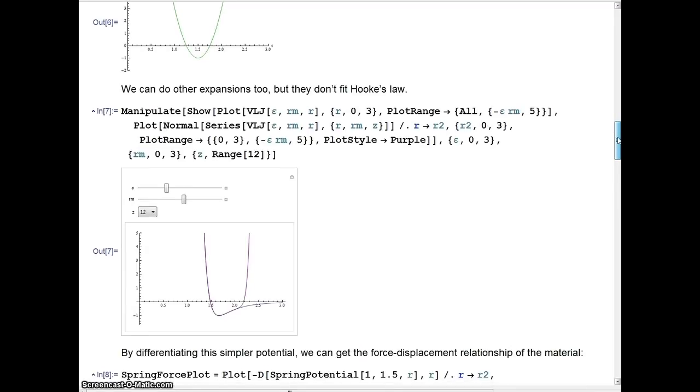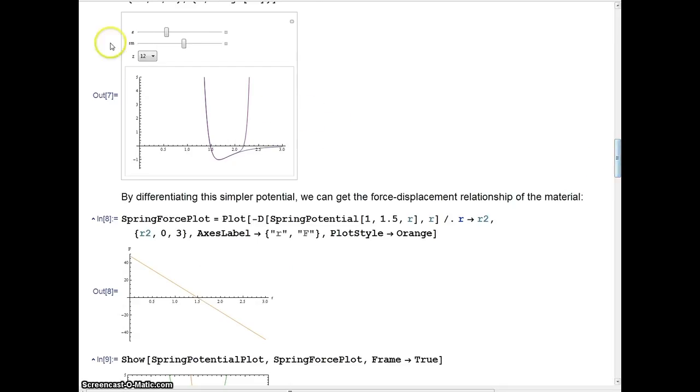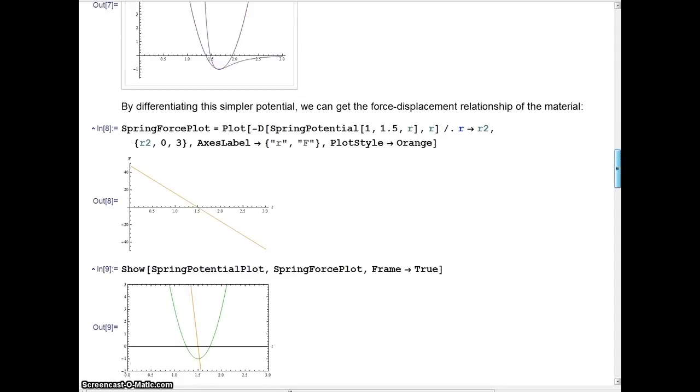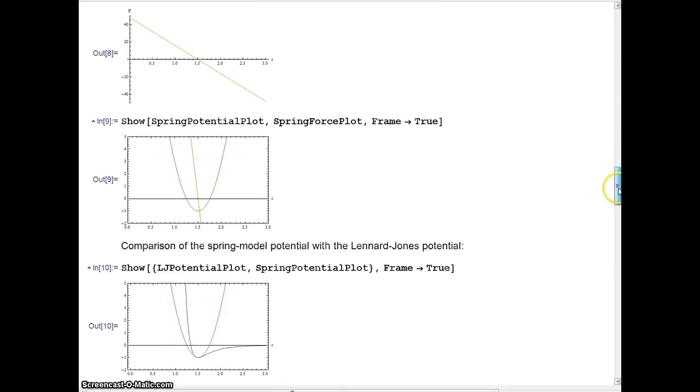So I've differentiated that second-order potential, and you can see here the force response for our approximated spring bond. You can look at our force response here, notice that like before, the force is positive when the atoms are close together and negative when they're farther apart, so it gets pulled to that sweet spot. I've plotted it here with the potential, so you can see how exactly it interacts with that potential.